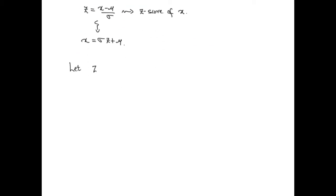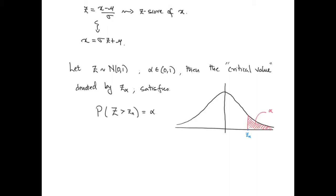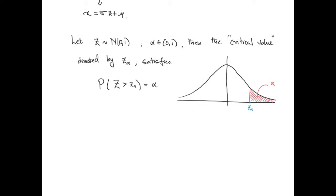We now describe critical values. Given an alpha inside the interval (0,1), the critical value z_alpha satisfies the following equation: the probability that capital Z is greater than z_alpha equals alpha. A pictorial representation of what the critical value satisfies is shown in this diagram of the bell-shaped curve. Notice that the red shaded region is exactly the probability that capital Z is bigger than z_alpha, and the point z_alpha is given in blue.